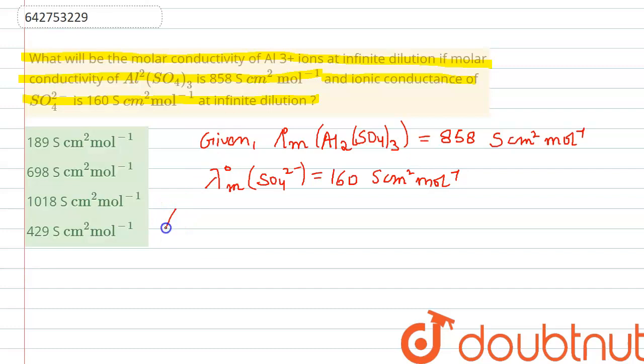From Kohlrausch's law, we can write that at infinite dilution, the molar conductivity of aluminum sulfate will be given as the sum of the ionic conductivity of their ions. So we will have this equal to lambda m0 for aluminum 3 positive ion times 2, because it is generating 2 aluminum ions, plus 3 times lambda m0 for sulfate ion.